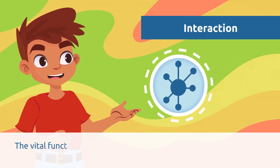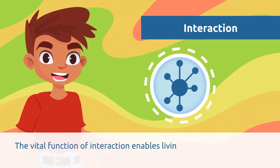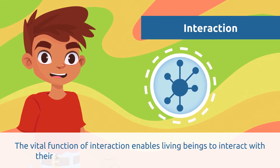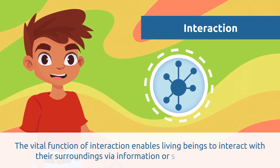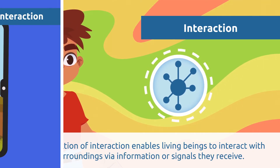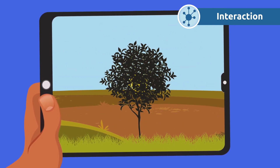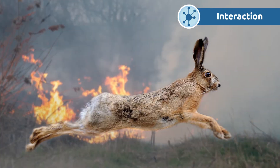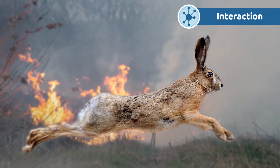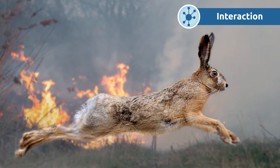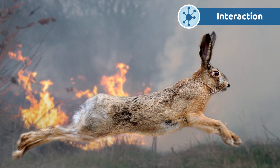The vital function of interaction enables living beings to interact with their surroundings via information or signals they receive. This way, they can respond, act, or react depending on the situation. Fleeing from danger like fire is an example of how animals interact with their surroundings. Human beings interact with one another as well — for example, when someone smiles at us, we usually smile back.